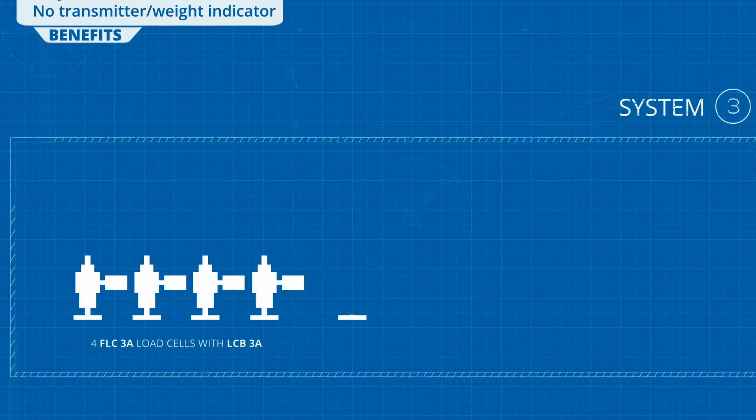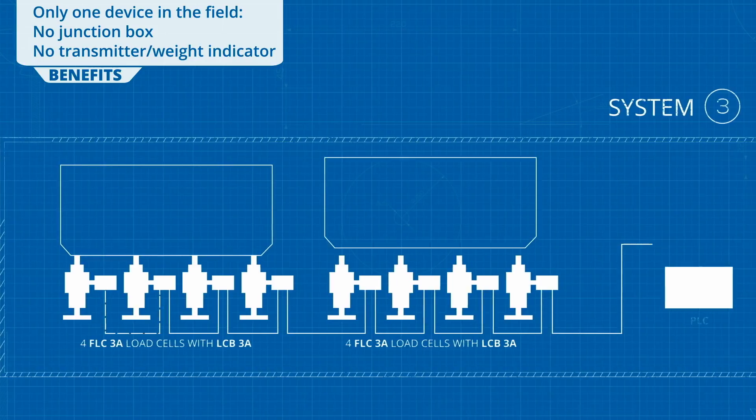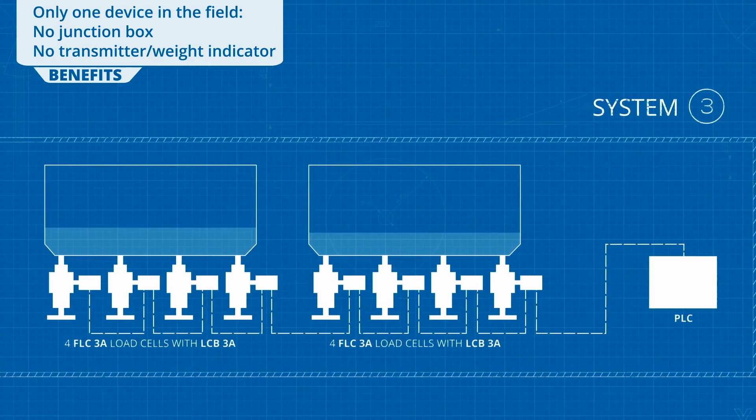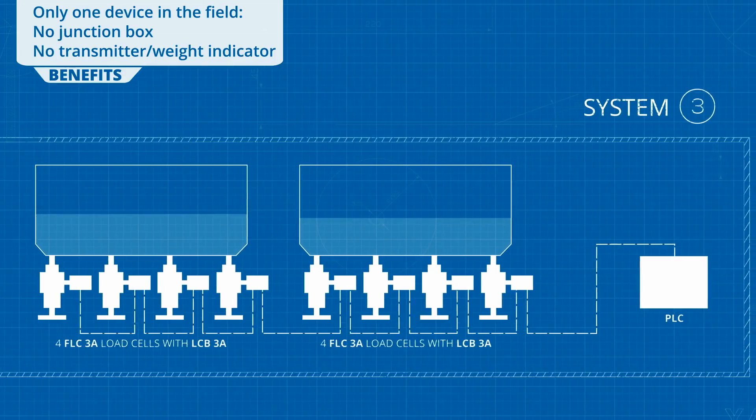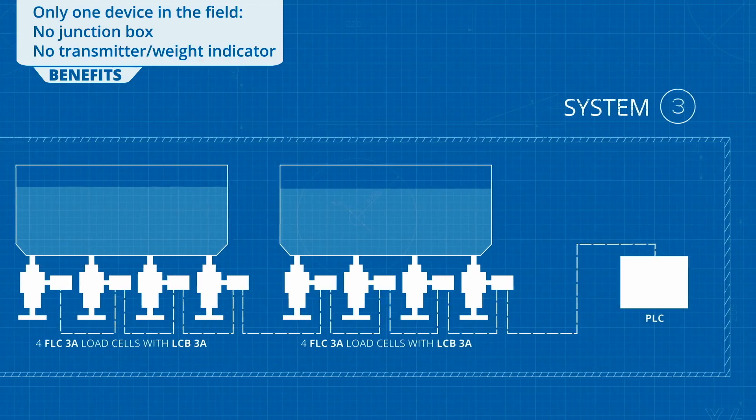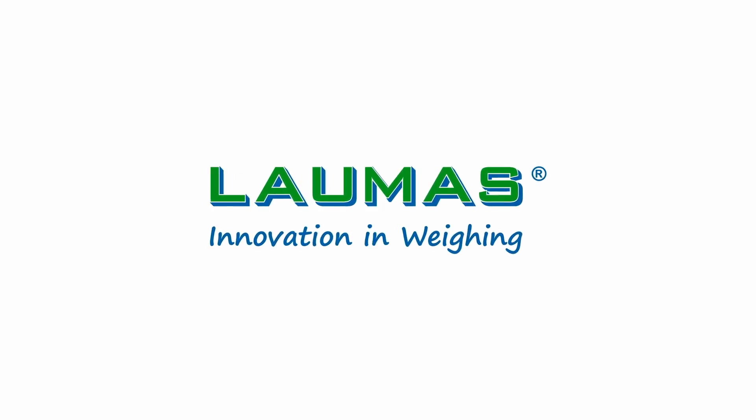The LCB3A weight digitizers transform the four FLC load cells into digital load cells. The load cells connected to each other by means of an in-out system, directly transmit the weight value to the PLC. See you next time.